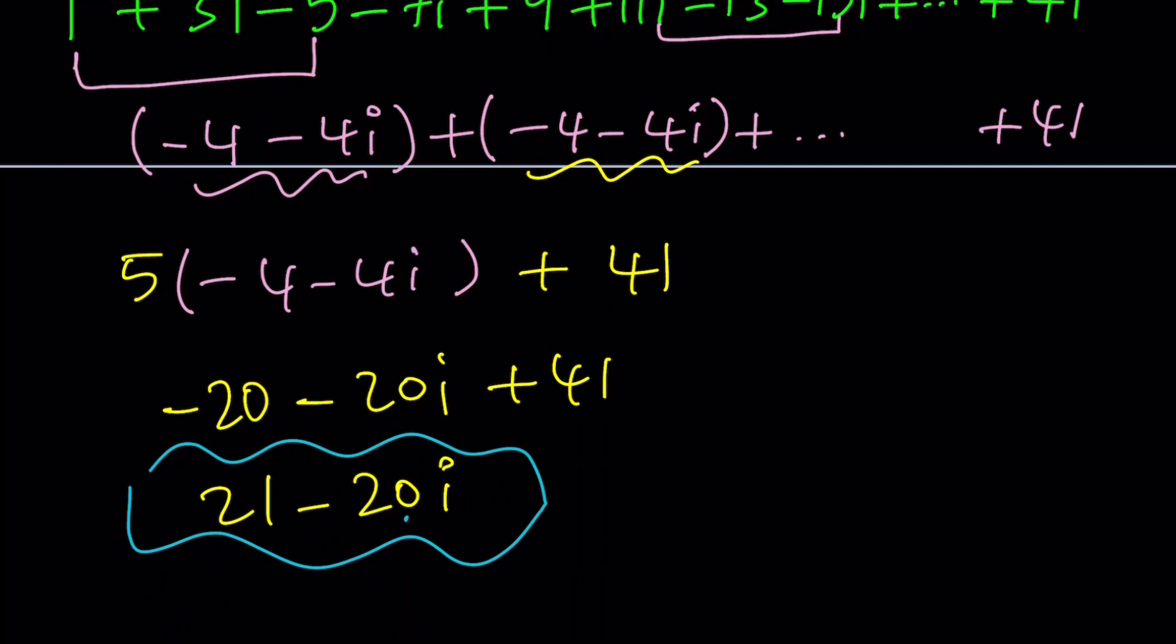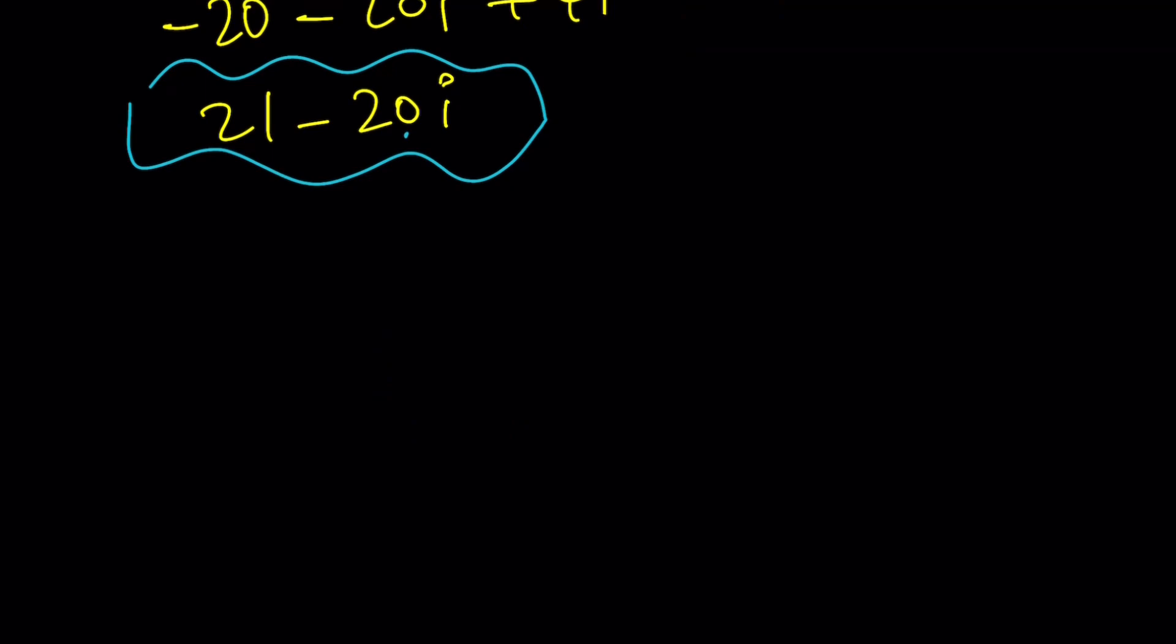For the alternative method, let me rewrite the original sum. We have 1 plus 3i plus 5i squared plus 7i cubed plus 9i to the 4th, so on and so forth, and this is going to end at 41i to the power 20. This is the sum we're trying to evaluate. It's a finite sum, by the way, it's not infinite. Infinite is a little different, obviously.